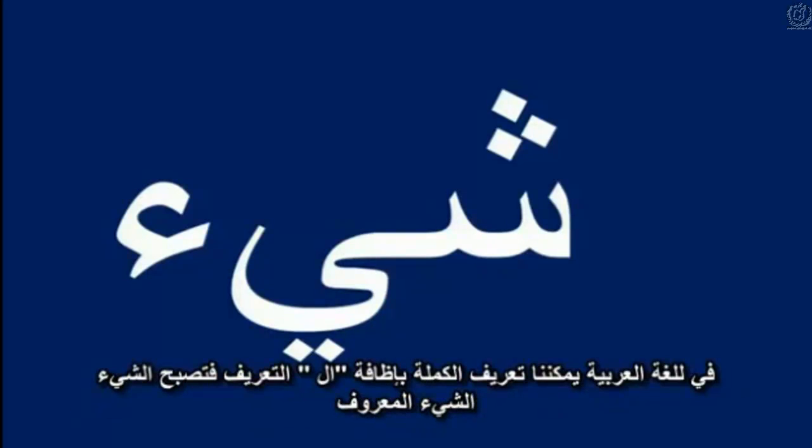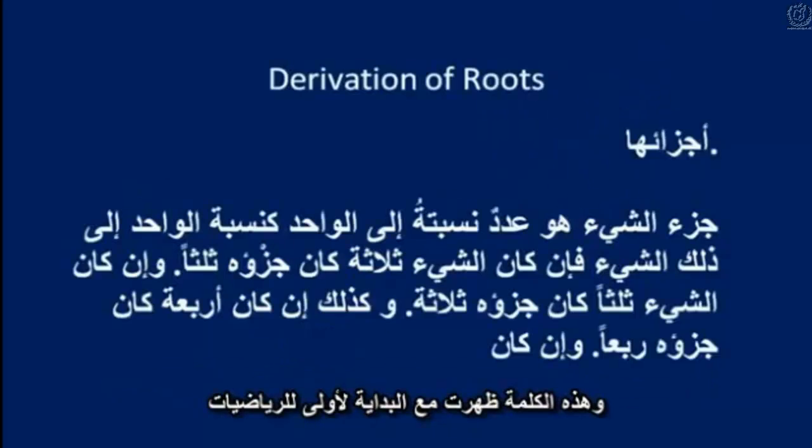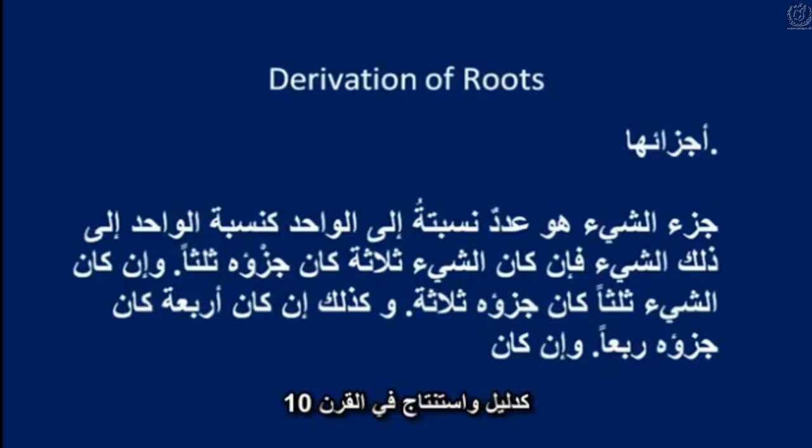In Arabic, we can make this definite by adding the definite article al. So this is al-sheen — the unknown thing. And this is a word that appears throughout early mathematics, such as this 10th century derivation of proofs.